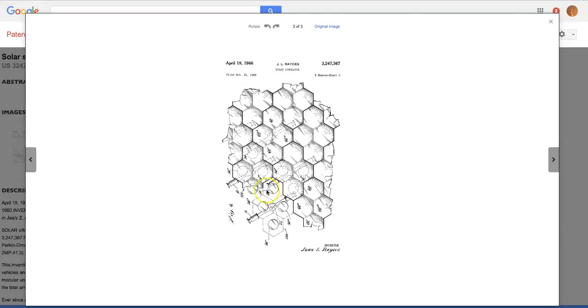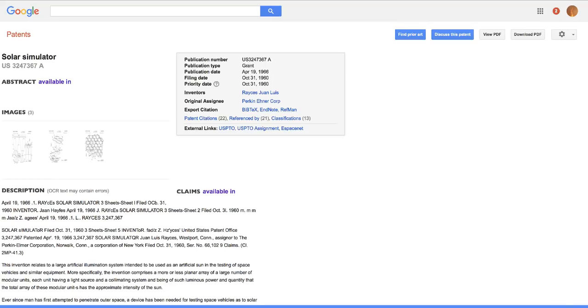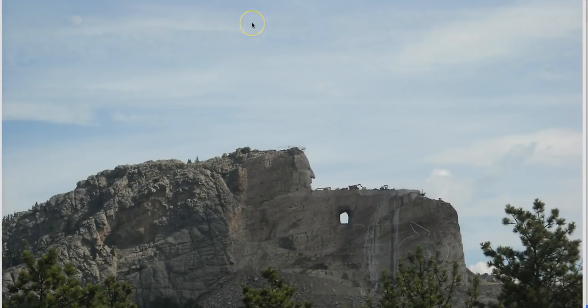There's a diagram of a solar simulator patented back in April of 1966. I shared an image, two images yesterday with you guys, of photos of Crazy Horse Monument in South Dakota.